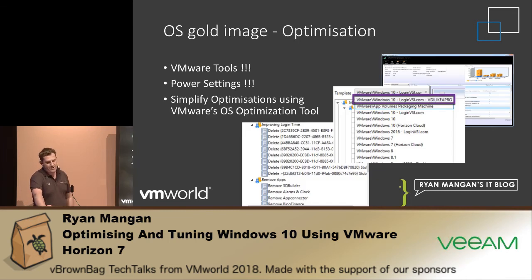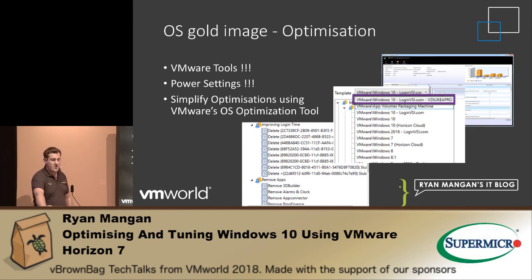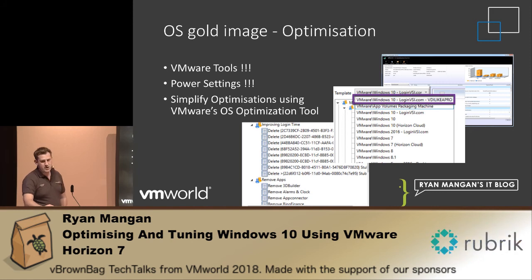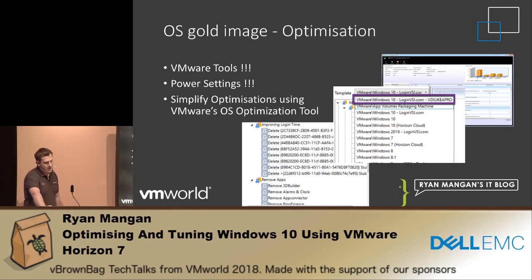VMware produced a fling a few years back — the VMware Optimization Tool. This is now becoming the norm, and not just in VMware — all of the other vendors are using VMware's tool as well. You can also create your own optimization configurations in there. For example, if you didn't like some of the default optimizations included, you can build your own profile which suits your specific environment.